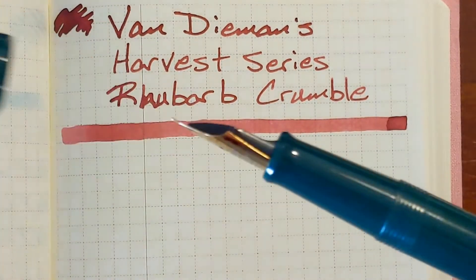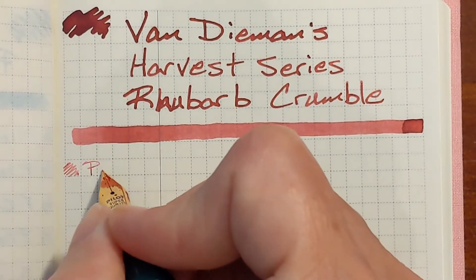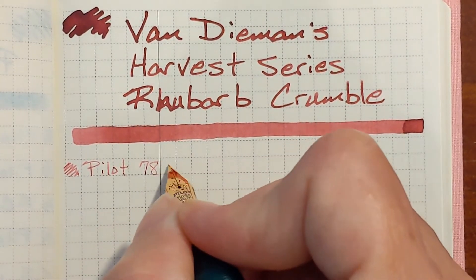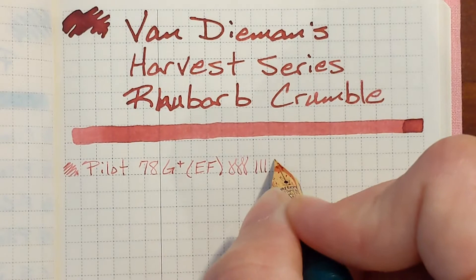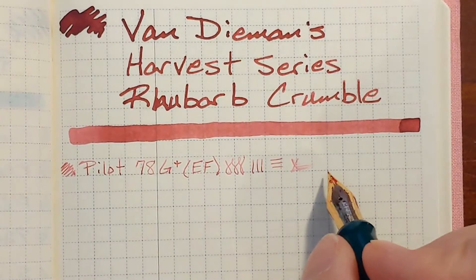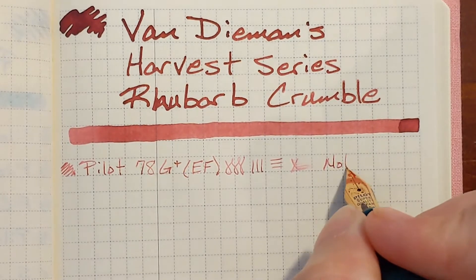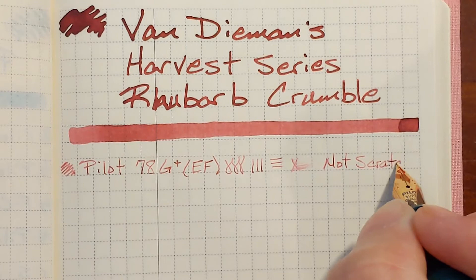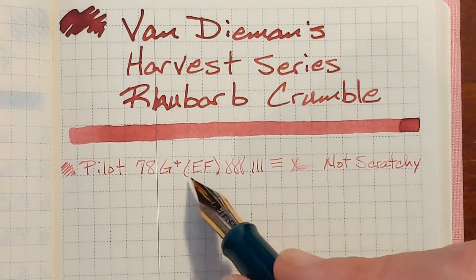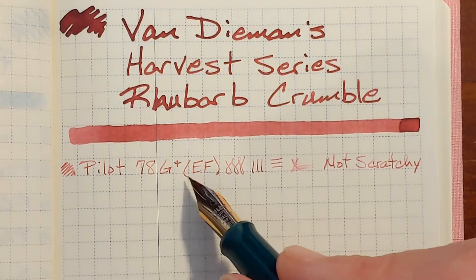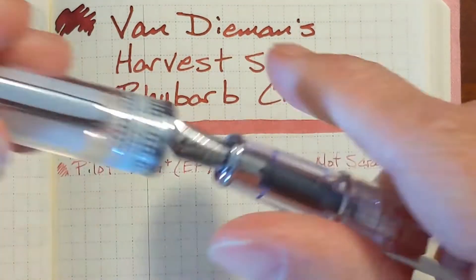First up is my Pilot 78G with an extra fine steel nib. It doesn't feel scratchy but it doesn't feel smooth either and it doesn't feel dry so I'm going to just put that it's not scratchy. But I wouldn't call it nice or enjoyable to write with. One thing against it is the line is very very fine and this particular color I just don't find it to be very legible.